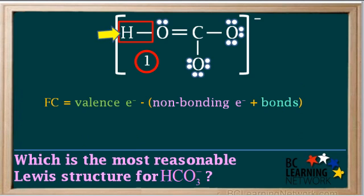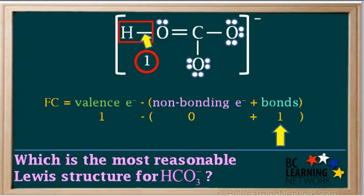We'll start with the hydrogen atom. Hydrogen has one valence electron, there are no non-bonding electrons around it, and it has one bond attached to it. So the formal charge on hydrogen is 1 minus 1 which equals 0, which we'll note above the H in the structure.